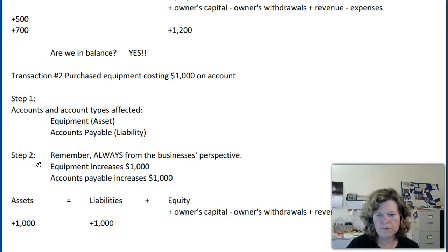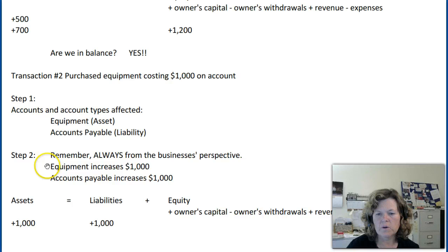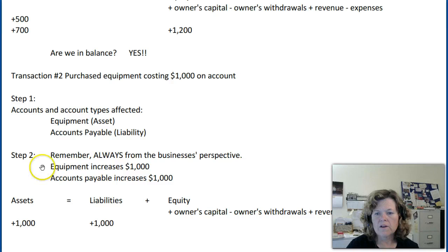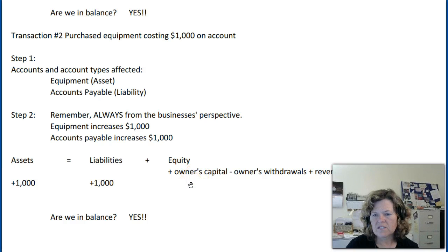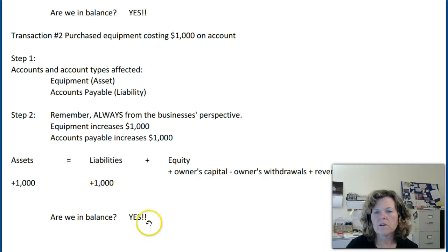Step two — always from the business's perspective. Equipment is increasing $1,000; we now have more equipment than we had before. Accounts payable also increases $1,000, because now we owe more than we used to. Applying this to the accounting equation: we have a $1,000 increase under assets, a $1,000 increase under liabilities, and nothing affected in equity — and that's fine. We just need to keep the equation in balance, and we are: plus $1,000 on the assets side and plus $1,000 on the liabilities side.